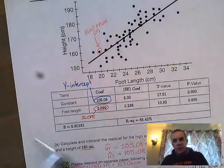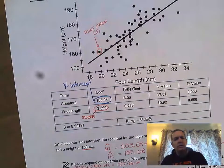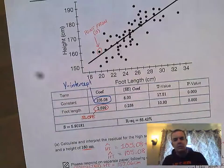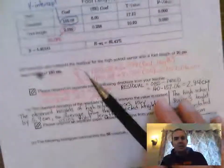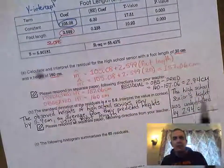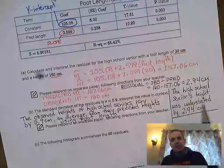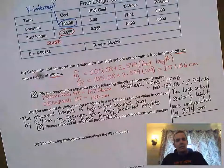What you really need to do is make it tied to this number, 2.94, and give context: the high school senior's height was understated by 2.94 centimeters.